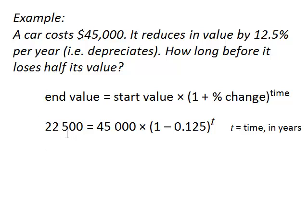So we go end value is half our starting value, which is 22,500. It is the starting value times 100%. And because it's going down, our percentage change is negative. Very important. It's reducing by 12.5%. So it's going down. And that simplifies to that equation. We're going to move the 45,000 across. And 1 minus 0.125 is 0.875.